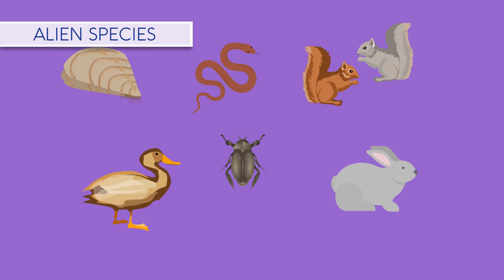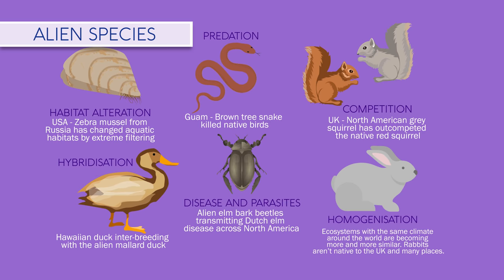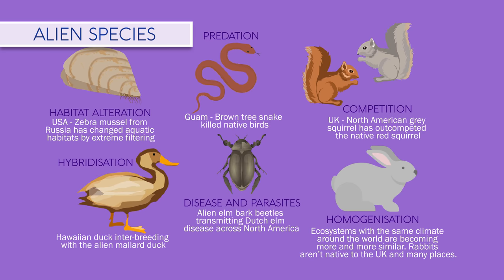A huge impact humans have had on planet Earth is the introduction of alien species to habitats. It is estimated that on any given day there are 3,000 species in transit aboard ocean-going vessels. Alien species can cause problems in a number of ways — pause the video and have a look.